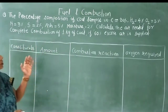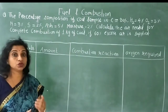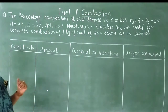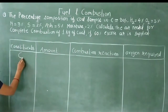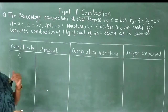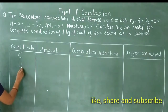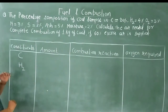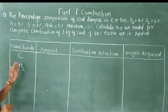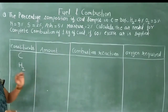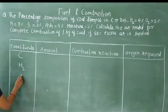First, we see that some constituents are combustible and some are non-combustible. Combustion will only happen in combustible ones, and oxygen will be needed only for those. Carbon is combustible, Hydrogen is combustible, Oxygen is already present so we subtract it, Nitrogen is non-combustible — it will not participate in any combustion reaction. Sulfur is a combustible material.